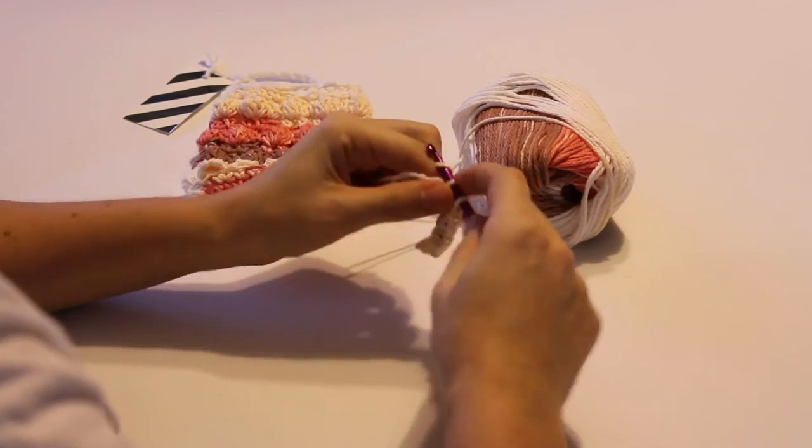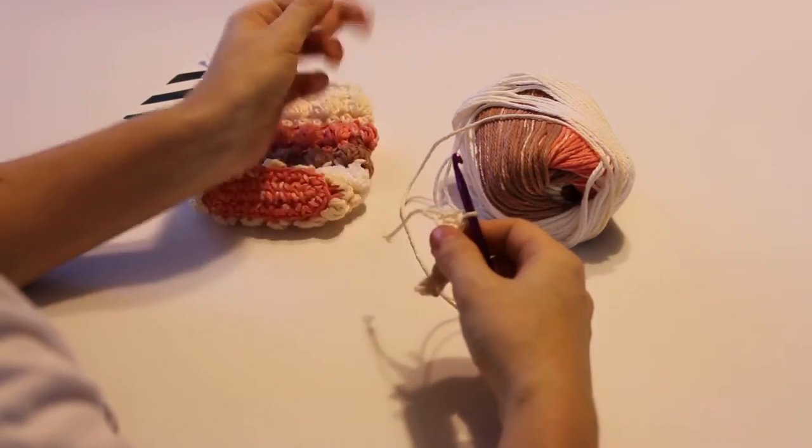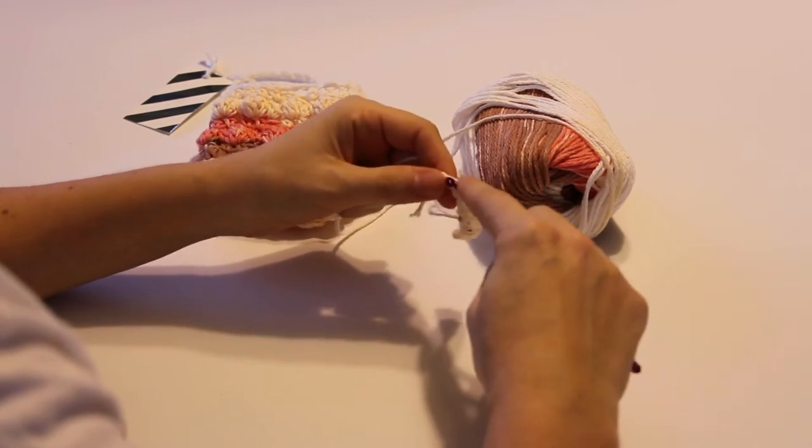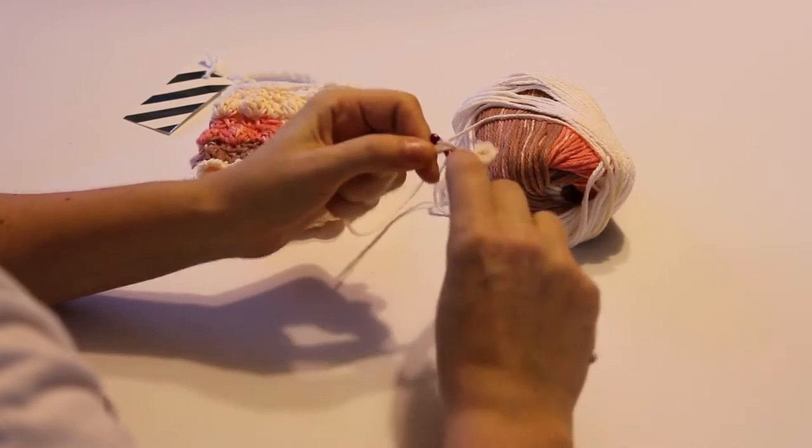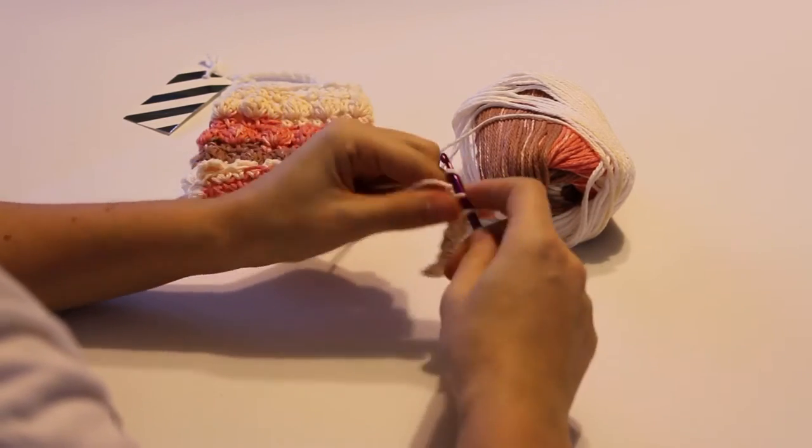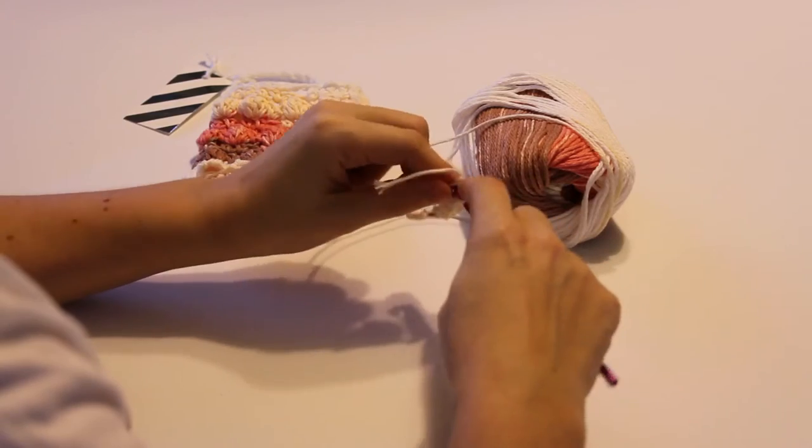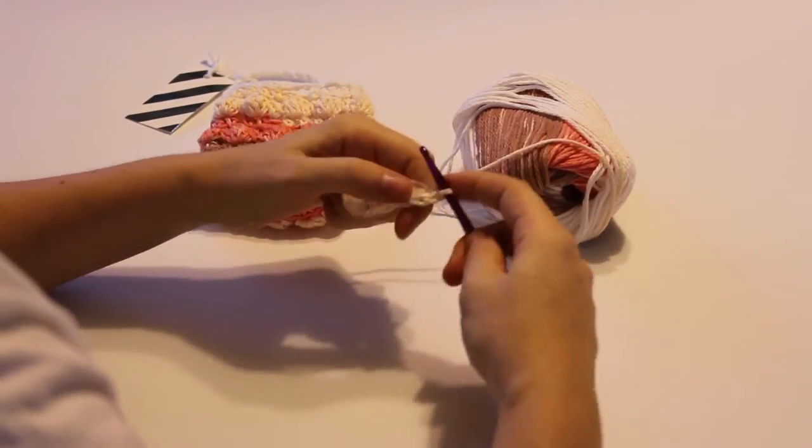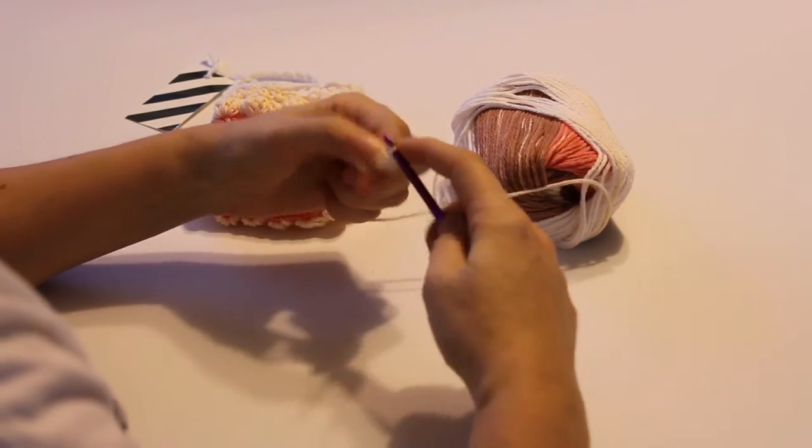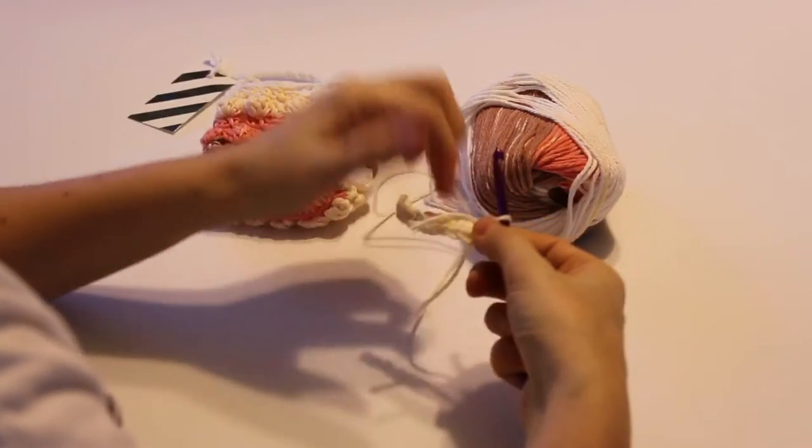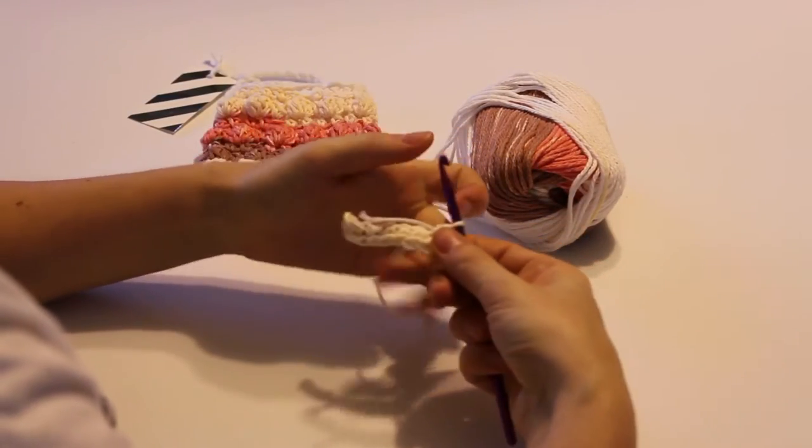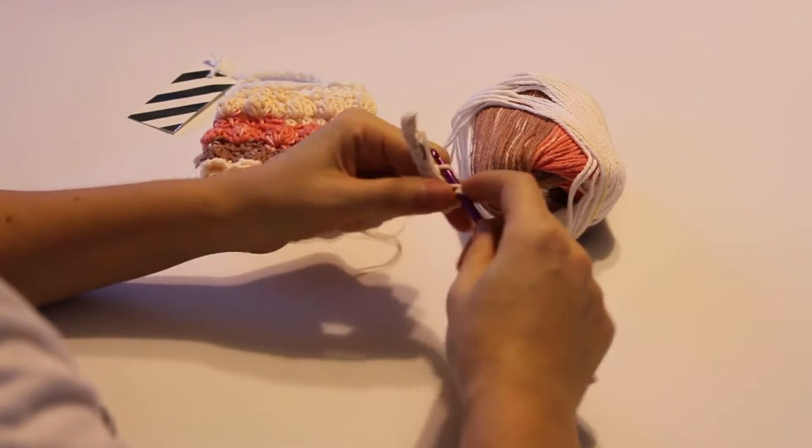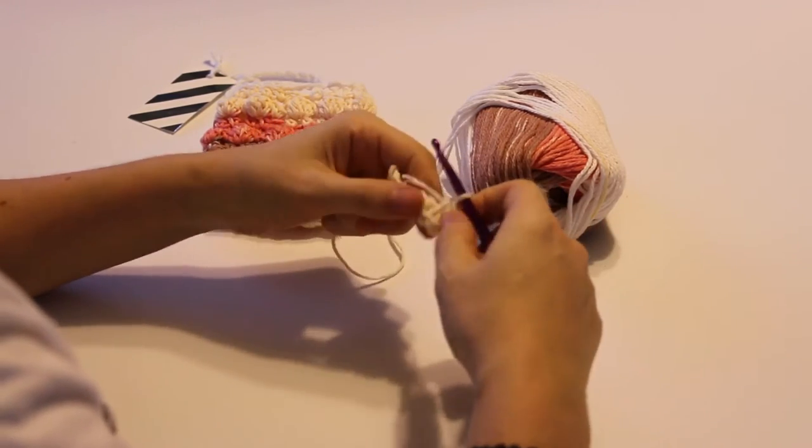Into the next five single crochet, or chains, you're going to work one single crochet. So I've got one, two, three, four, and five. Now into this last chain, you're going to be working three single crochets. And you're going to kind of work over your tail just so it gets tucked in now. If you want to tuck in at the end with your needle, that's fine. I just like to get it done with.